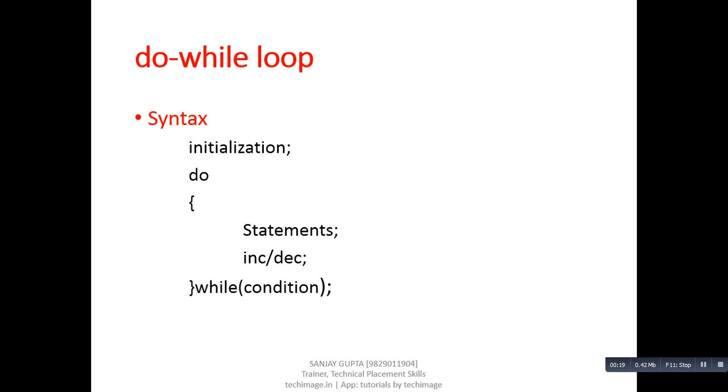First of all, this loop performs initialization operation. After initialization, it performs execution of statements. After statement execution, increment or decrement operation is performed. After increment or decrement, the loop checks its condition. If this condition is true, then loop repeats all these statements. If condition is false, then loop terminates its execution cycle.